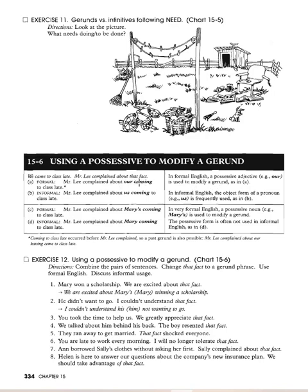'Our' is modifying 'coming' — 'coming' is the gerund. Formal: 'Mr. Lee complained about Mary's coming to class late.' Informal: 'Mr. Lee complained about Mary coming to class late.' In formal English you use the possessive — 'Mary's coming to class late.' In informal English you drop the possessive. If the possessive is missing, that's spoken/informal English used with friends and family. If you're writing an academic paper, use the apostrophe-S possessive to modify the gerund.